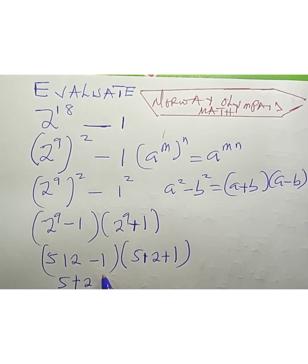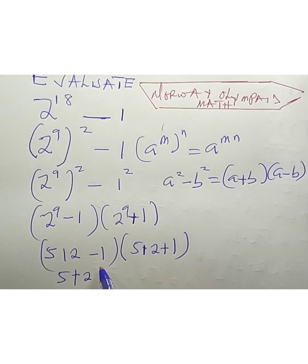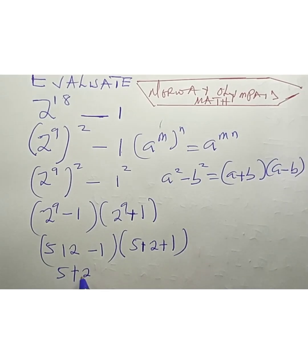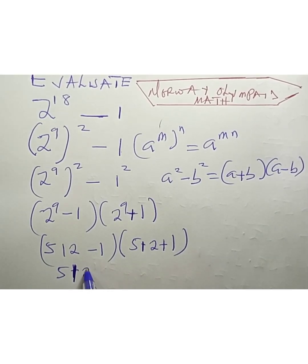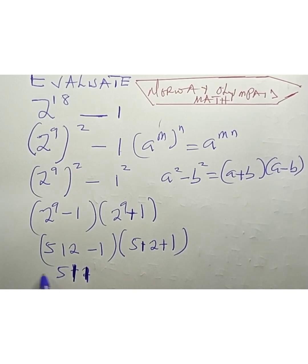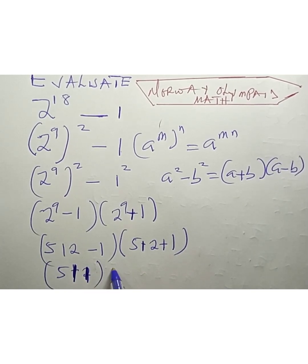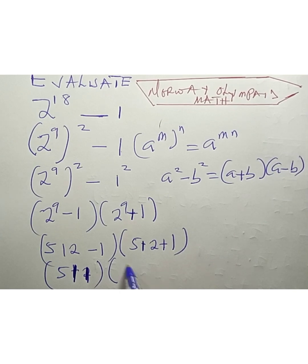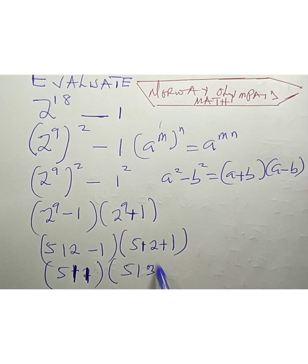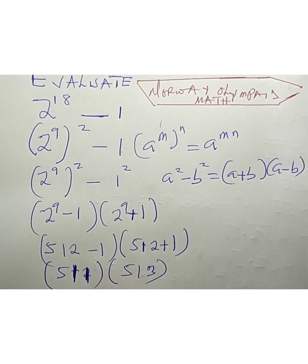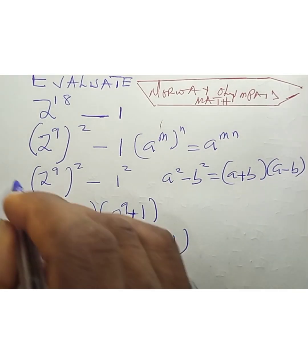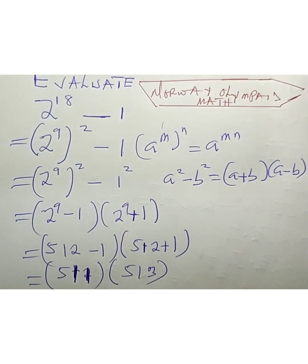512 minus 1 is 511, and 512 plus 1 is 513. So we have 511 multiplied by 513. We can express this in a more expanded form to compute the product.